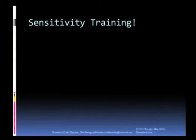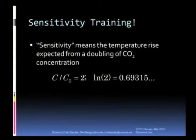Okay. Again, what we mean by gamma and tau. Now we are going to do some sensitivity training. Sensitivity is what the IPCC means when they say that temperature rises.